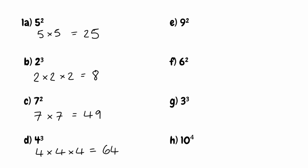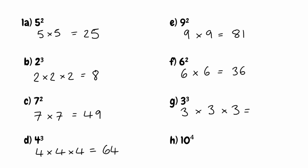For part e, we've got 9 squared — 9 multiplied by 9 — which gives us 81. For part f, we've got 6 squared, or 6 to the power of 2, so 6 multiplied by 6 gives us 36. For part g, we've got 3 cubed: 3 multiplied by 3 multiplied by 3. 3 times 3 is 9, and multiplied by 3 again gives us 27.